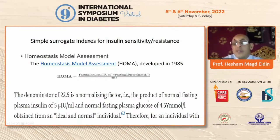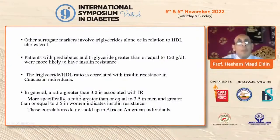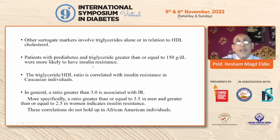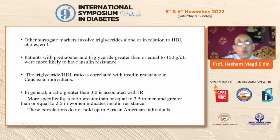The reason for dividing by 22.5 in HOMA-IR is that it is the product of normal plasma insulin and normal fasting plasma glucose, allowing comparison with an ideal normal individual. Other surrogate markers include triglycerides — levels above 150 mg/dL in pre-diabetes are more likely to indicate insulin resistance. The triglyceride-to-HDL ratio above 3.5 in males or 2.5 in females also indicates insulin resistance, though this was not applicable in African American individuals.